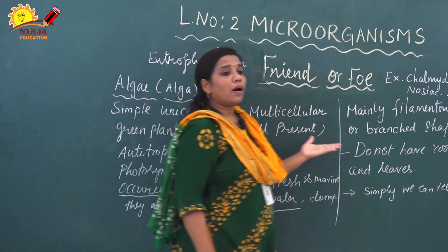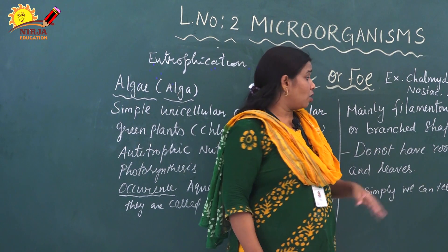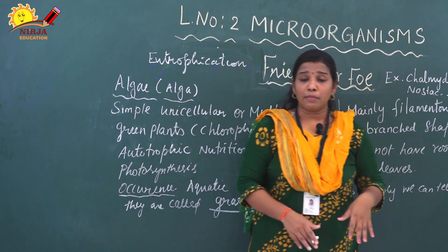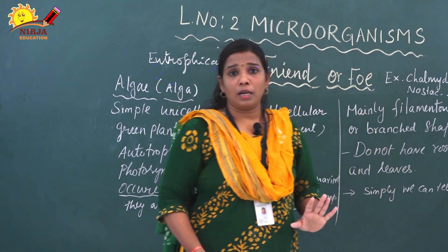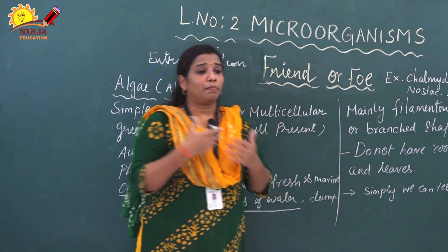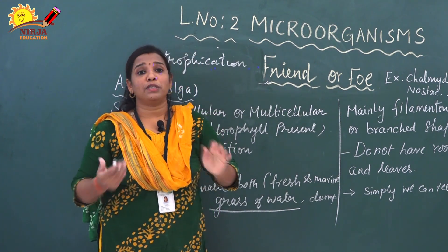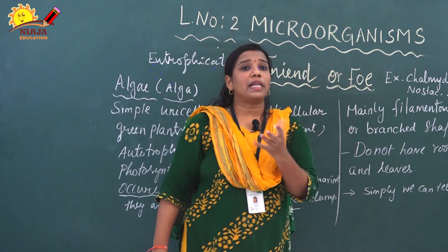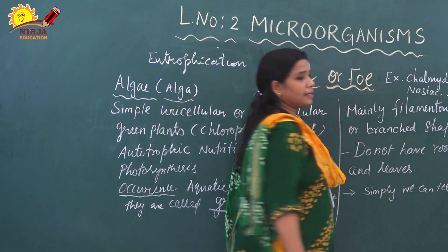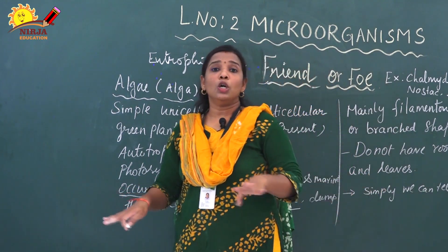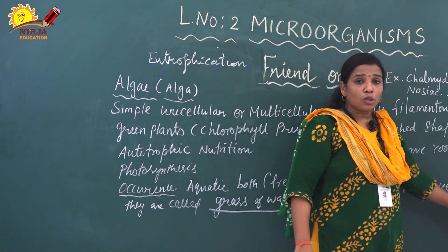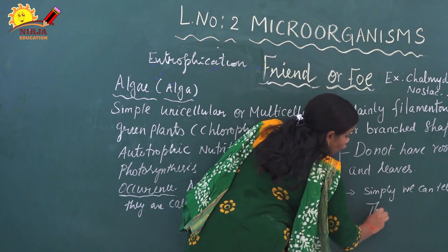Algae mainly have a filament-like or branched shape structure. They do not have separate stem, root, or leaves. They contain chlorophyll but do not have distinct plant parts like root, stem, and leaf — all of these are absent. That is why they have a clumps-like appearance. This type of body organization in algae is called thallus, which means we cannot differentiate roots, stem, and leaves. So algae come under the category of thallophyta.